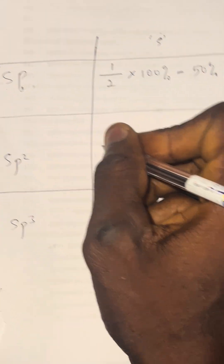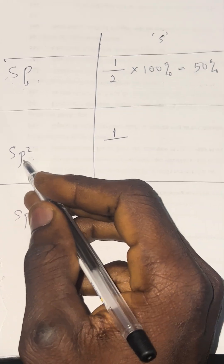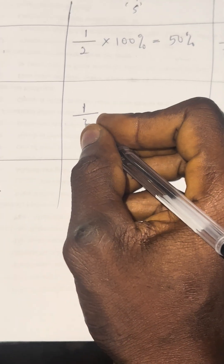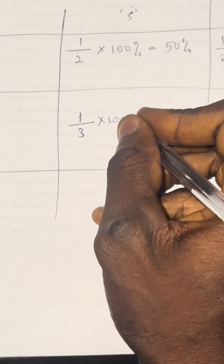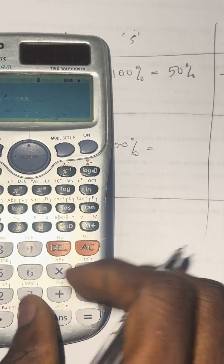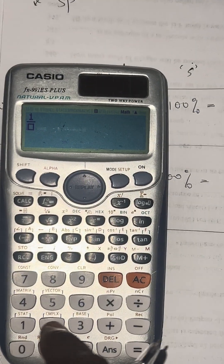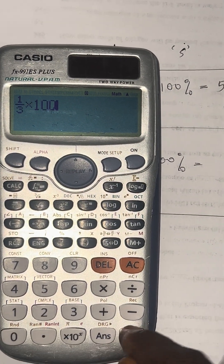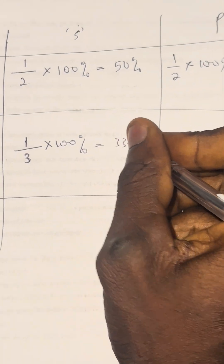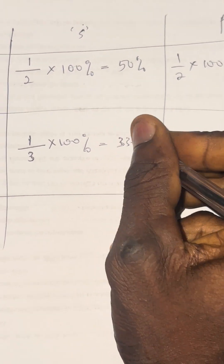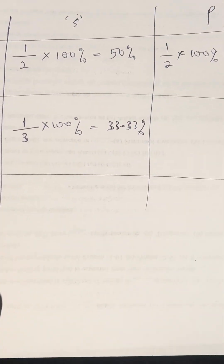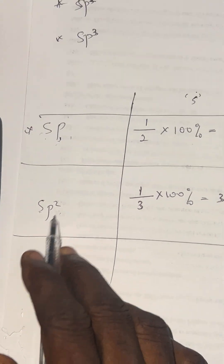The next one is SP2. For SP2, to calculate the percentage of S character: how many S do we have? We have 1. The P we have here is 2, so 2 plus 1 S makes it 3. That's 1 over 3, multiplied by 100%. We get 33.33%. So 33.33% is the percentage of S character in SP2.